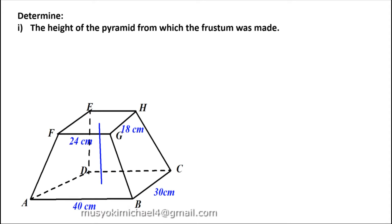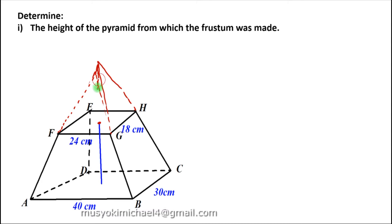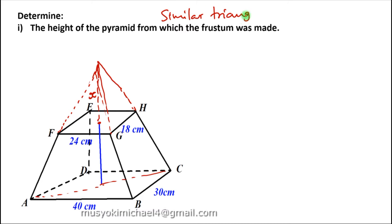For us to get the height of the pyramid from which the frustum was made, we need to include the part that was removed. So we are going to draw part of its sketch. We are going to use the knowledge of similar triangles — that is, similarities — and in that case we are going to compare the base.